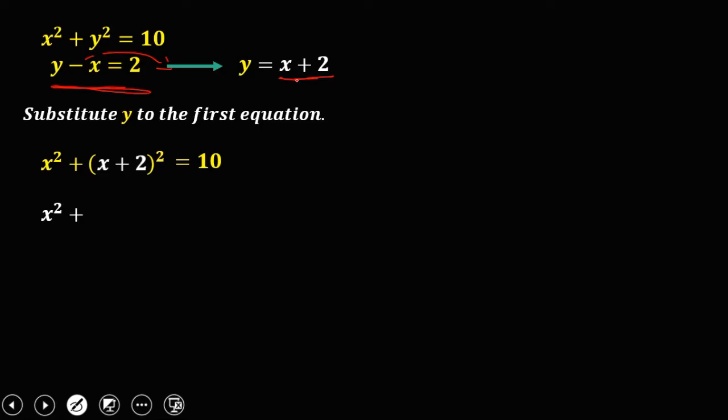Then simplify this equation. So we can solve this one using this SMS, square multiply and square. So the square of x, that's x squared. Then multiply 2 times 2, that's 4 times x, that's 4x. Then the square of positive 2, that's positive 4, then equals 10.